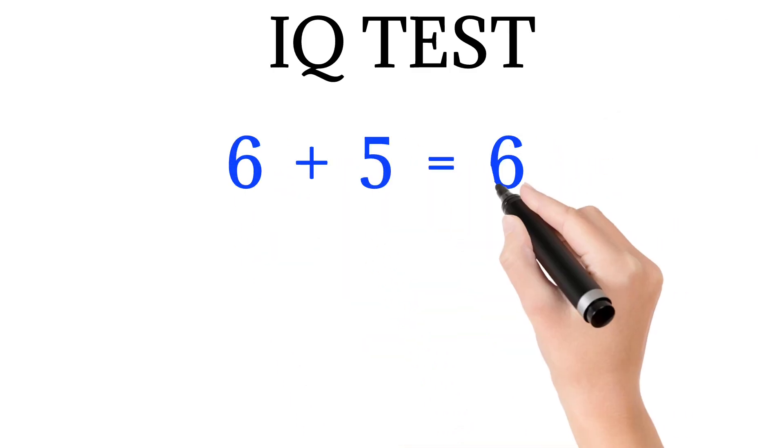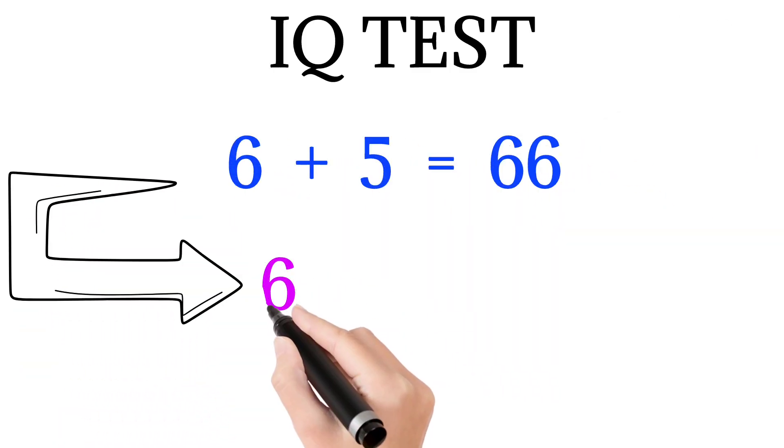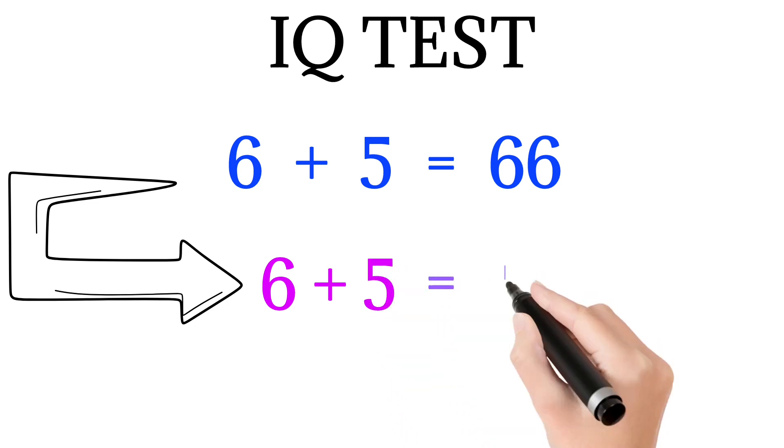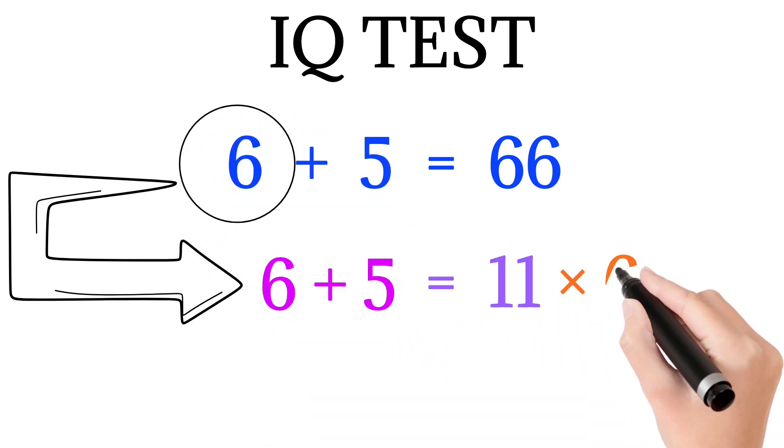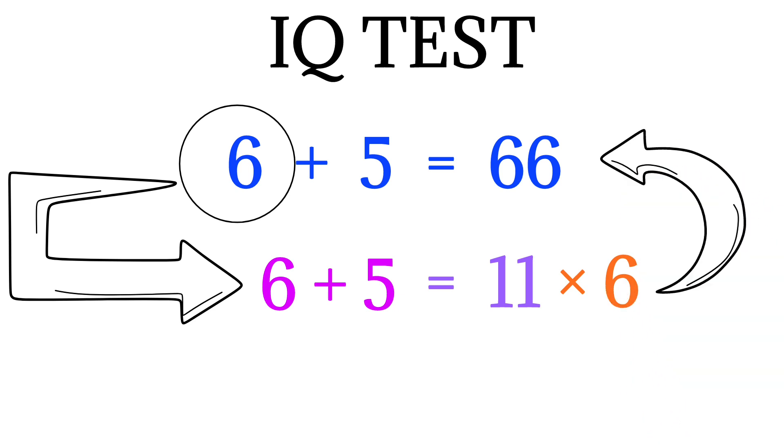In this case also, if we add both the numbers, that is 6 plus 5, we get 11. And now if we multiply it with the first number, that is 6, we get 66.